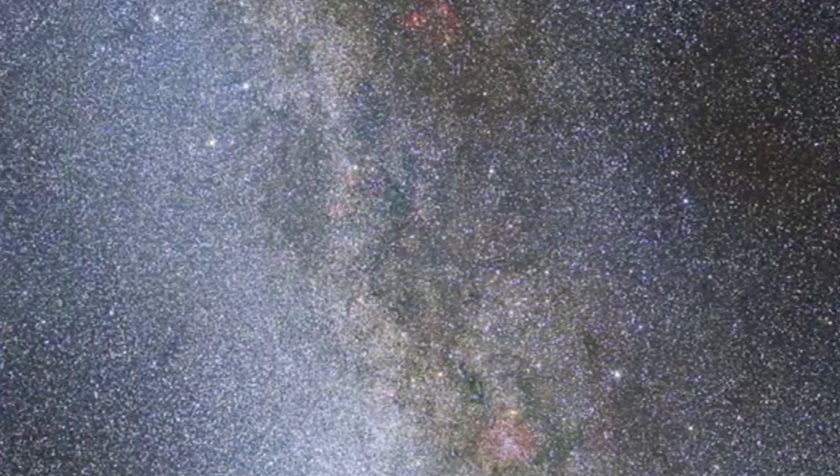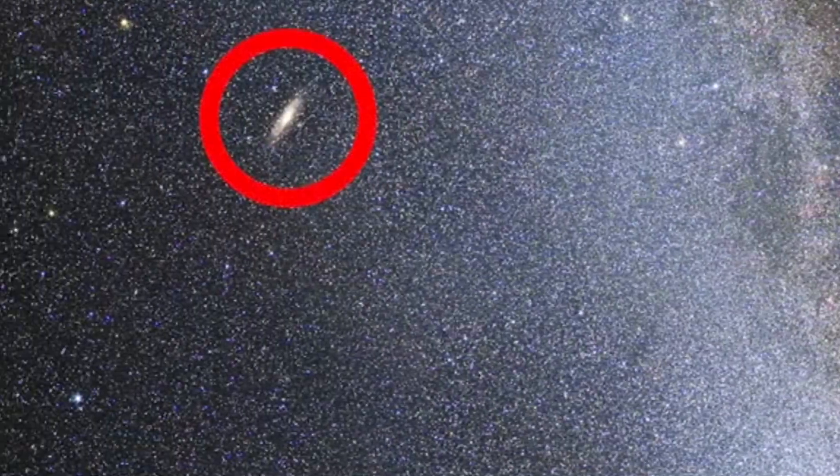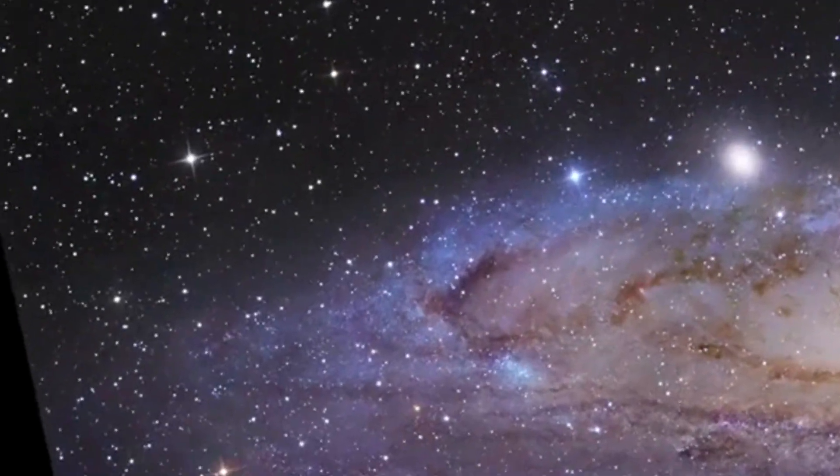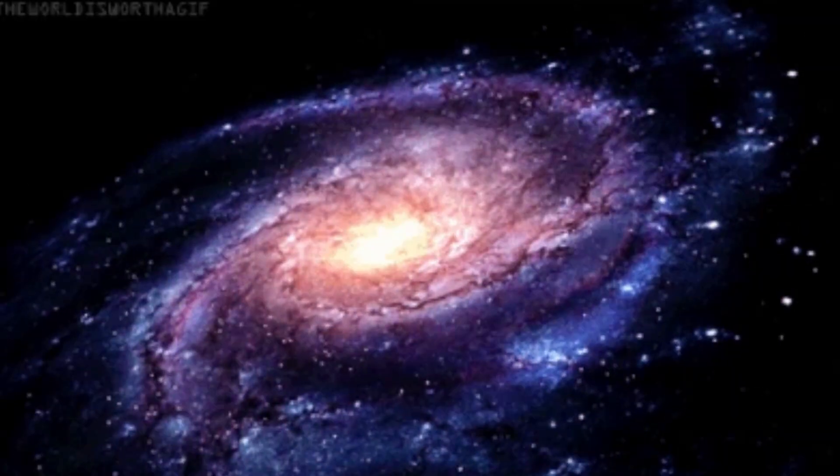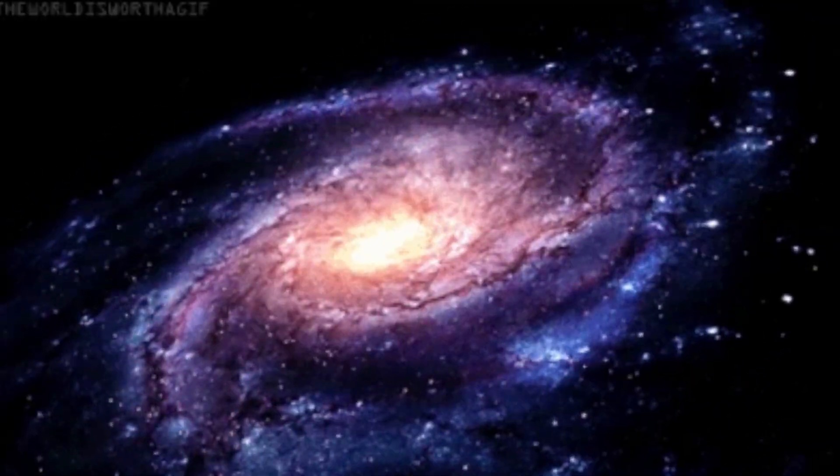Andromeda is huge, much bigger than you think. Diameter, approximately 220,000 light years. Milky Way, approximately 100,000. Star count, 1 trillion. Milky Way, approximately 400 billion. Dark matter halo may stretch over 1 million light years, almost reaching halfway to the Milky Way.